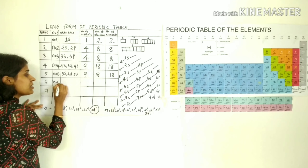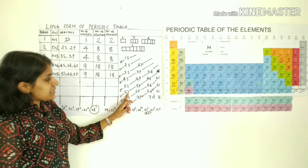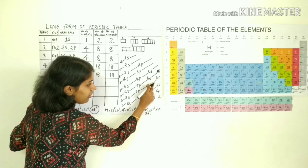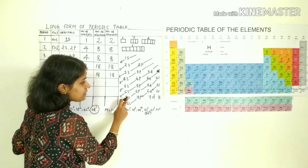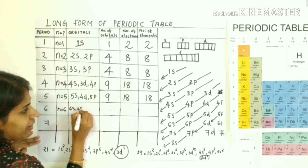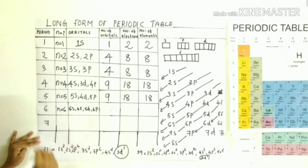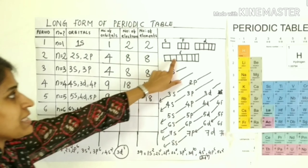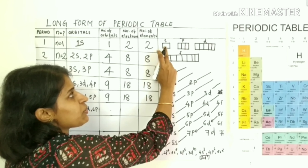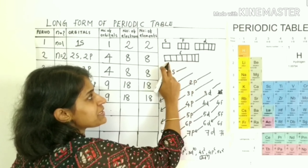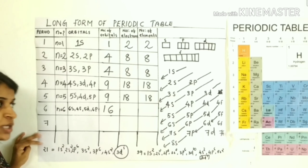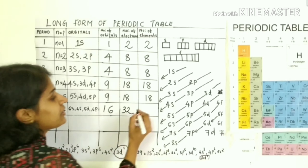The sixth period has n equal to 6. The filling order is 6s, 4f, 5d, and 6p. The orbitals are: s=1 orbital, f=7 orbitals, d=5 orbitals, p=3 orbitals. Total: 1+3=4, 4+5=9, 9+7=16 orbitals. Number of electrons = 16 × 2 = 32. Therefore the sixth period has 32 elements.